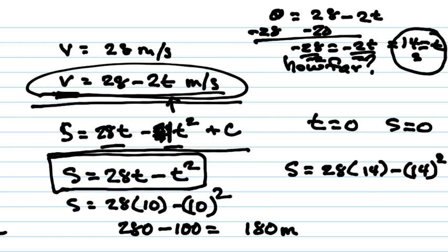So s equals 28 times 14 minus 14 squared. Somebody have a calculator because I can't do those in my head. 392 minus 196. Which gives us a final of 196 meters.